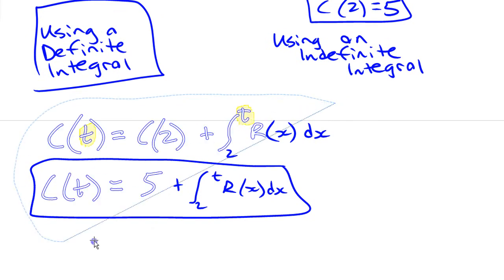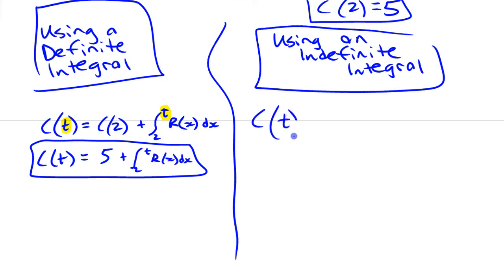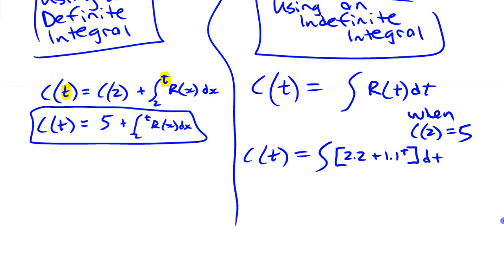We can also do it using an indefinite integral. Using an indefinite integral, we're going to start with this concept that this consumption is the integral of the rate when we use that initial condition. We want the integral of that 2.2 plus 1.1^t, which was 2.2t plus 1.1^t divided by ln(1.1) plus some constant c. That's where our initial condition is going to come in.